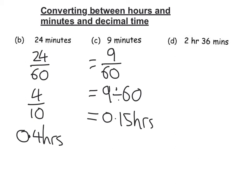Last one, 2 hours and 36 minutes. So I've got 2 hours, let's deal with the 36 minutes first. I've got to change that into decimal hours, so that's 36 over 60.